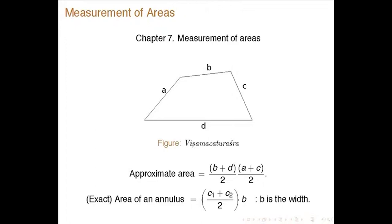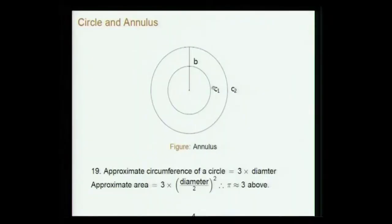For an annulus — the region between two circles, between the circumferences of two circles — if C₁ and C₂ are the circumferences, then the area is given as (C₁ + C₂)/2 × b. One can check that this is exact, exactly correct.